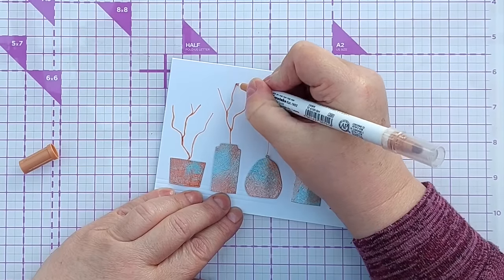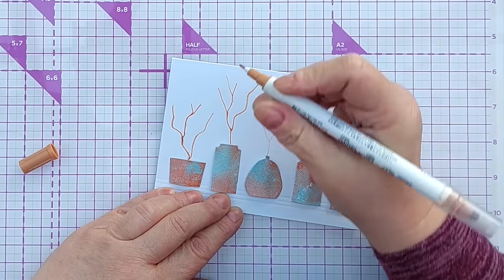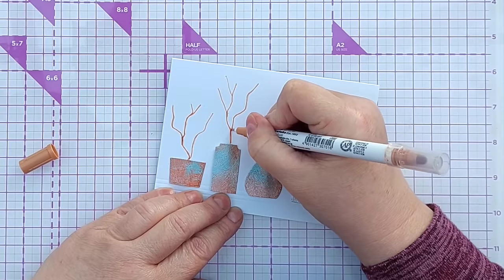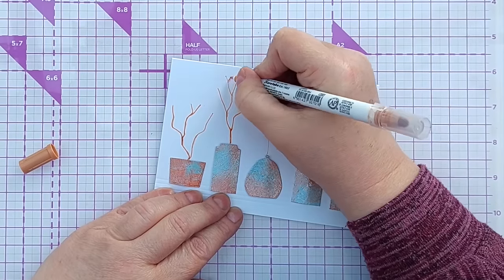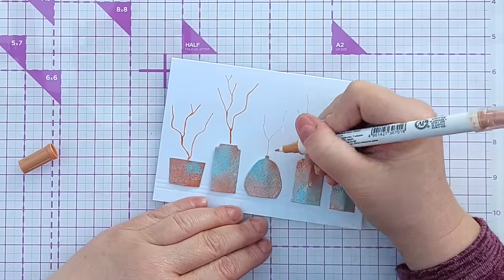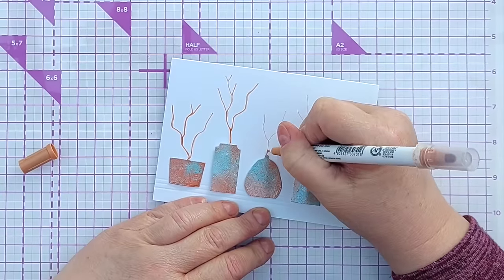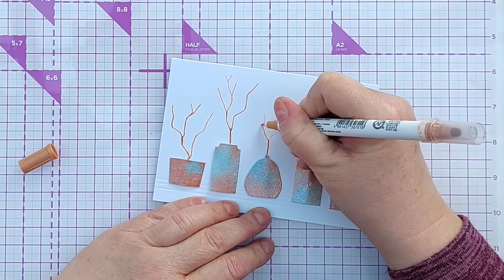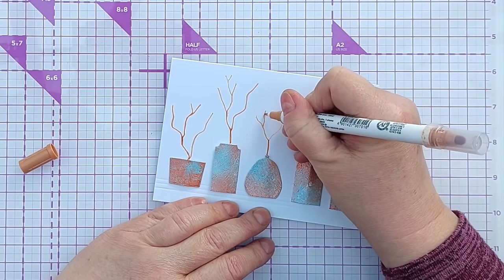With branches what you tend to find is that the ones that would be closer to the tree are thicker so you could thicken those up a bit and the ones that are further from the tree branch, the tree trunk rather, are thinner. So you can give these ones a bit more weight down the bottom and then let these ones thin out a bit.